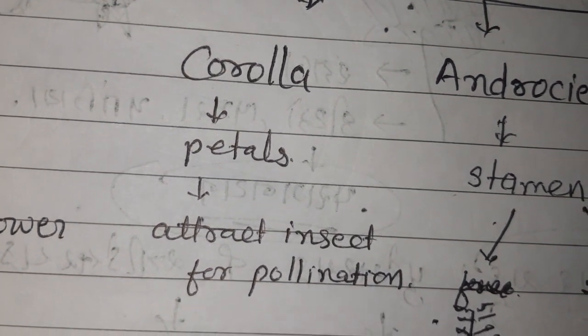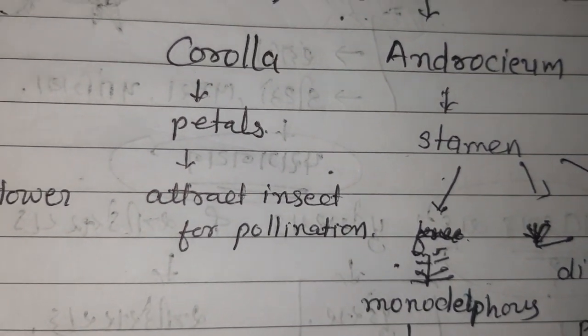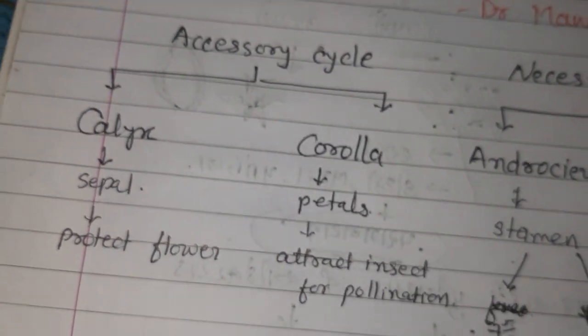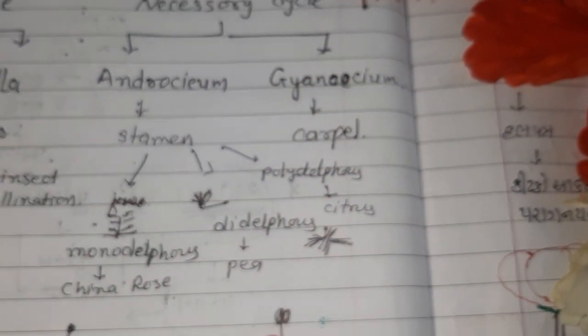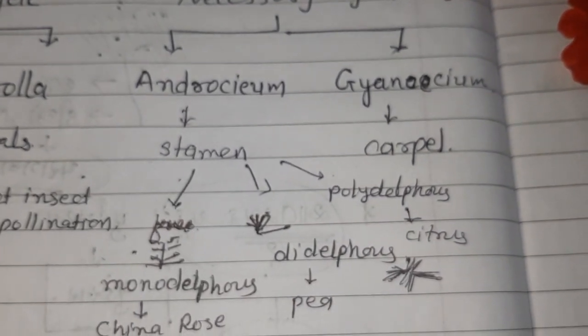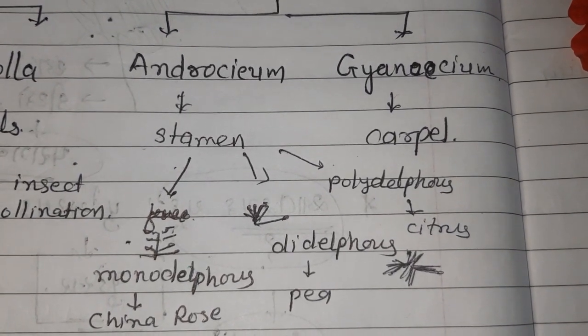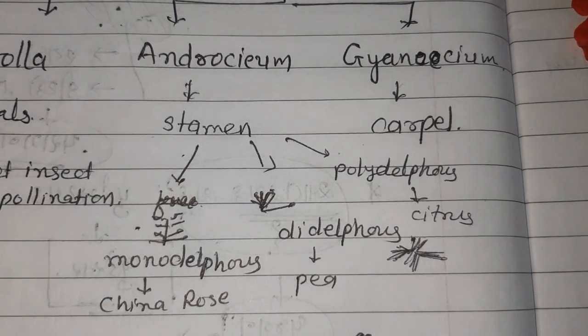So this is calyx and corolla, helps for protection and pollination. They are accessory cycles. Now there are two necessary cycles: androecium and gynoecium. Androecium is made up of stamens, gynoecium is made up of carpels.